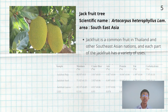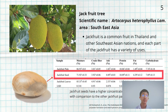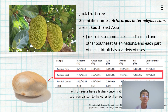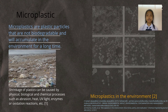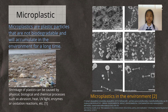The plant that we are interested in is jackfruit, because jackfruit is easy to find in the local area of Thailand. As seen in the table, the seeds have the highest lipid content. Microplastics are tiny plastic particles that result from both commercial product development and the breakdown of larger plastics.